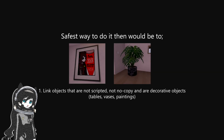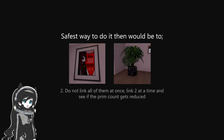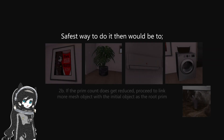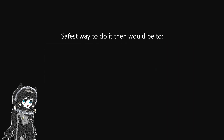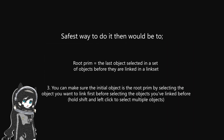So the safest way to do it is by linking non-scripted or decorative objects that are not no-copy objects. Do not link all of them at once — link two at a time and see if the prim count gets reduced, and if it does, proceed to linking more mesh objects with the initial object as the root prim. You can make sure the initial object is the root prim by selecting the object you want to link first, then the objects you've linked before.